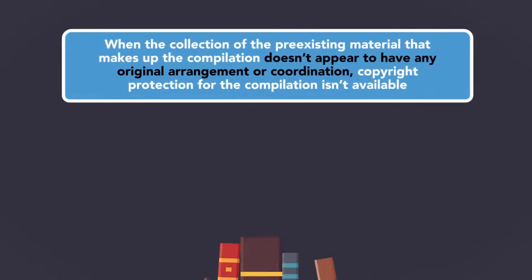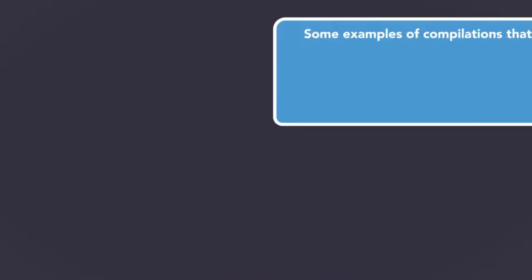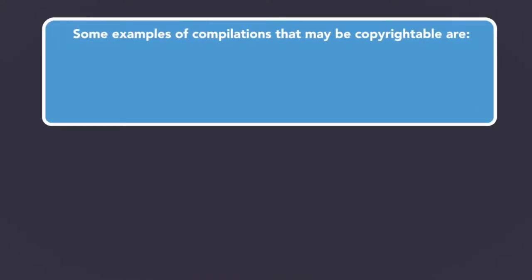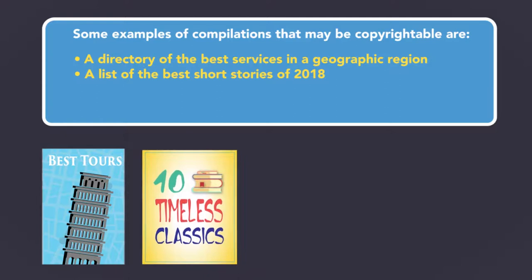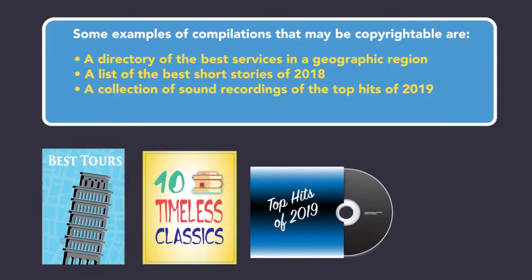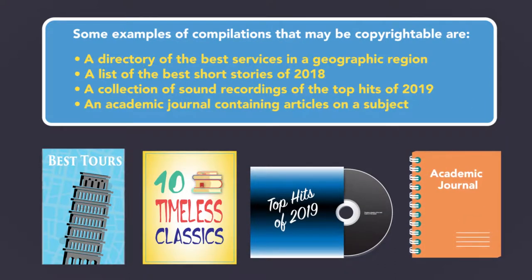When the collection of the pre-existing material that makes up the compilation doesn't appear to have any original arrangement or coordination, copyright protection for the compilation is not available. Some examples of compilations that may be copyrightable are a directory of the best services in a geographic region, a list of the best short stories of 2018, a collection of sound recordings of the top hits of 2019, or an academic journal containing articles on a subject.